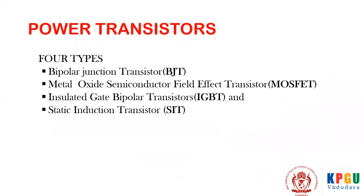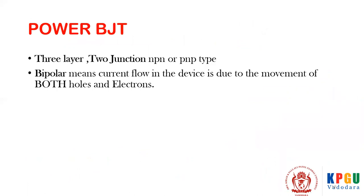In this session we are going to discuss about Bipolar Junction Transistor; in subsequent lectures we are going to discuss about MOSFET and IGBT. A Power BJT is a three-layer, two-junction NPN or PNP type transistor. It is known as bipolar because the current flow is due to both majority and minority carriers, that is electrons and holes. It carries current normally in one direction only, from collector to emitter.